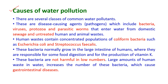The causes of water pollution: there are several classes of common water pollutants. The first one is disease-causing agents called pathogens, which include bacteria, viruses, protozoa and parasitic worms. These enter into the water from domestic sewage and untreated human and animal wastes.